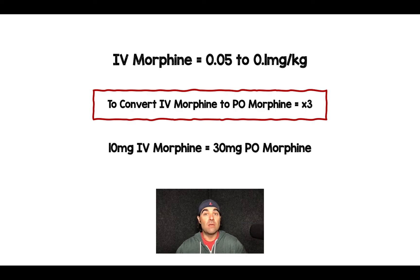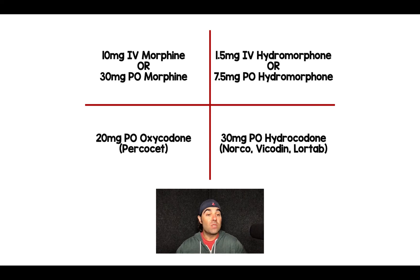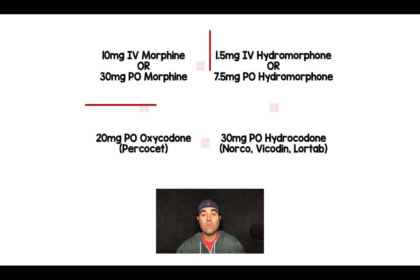Once you know this, converting between other opioids is not that difficult. In this 4x4 table, I've given you the equivalent dosing depending on which opioid you're trying to use. So 10 milligrams of IV morphine or 30 milligrams of PO morphine is the equivalent of 1.5 milligrams of IV hydromorphone (also known as Dilaudid), or 7.5 milligrams of PO hydromorphone, which is the same as 20 milligrams of PO oxycodone (traditionally in Percocet), and 30 milligrams of PO hydrocodone, which comes in Norco, Vicodin, and Lortab. Essentially, these are all equal doses, give or take.